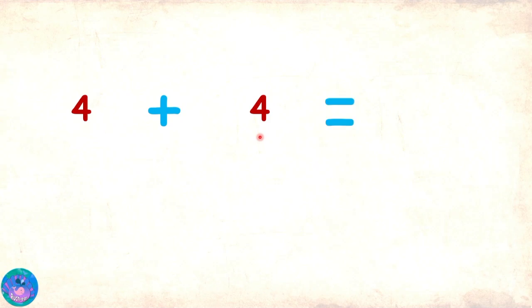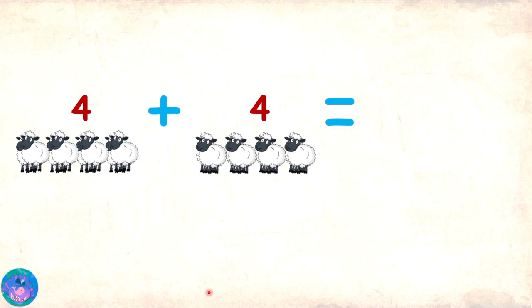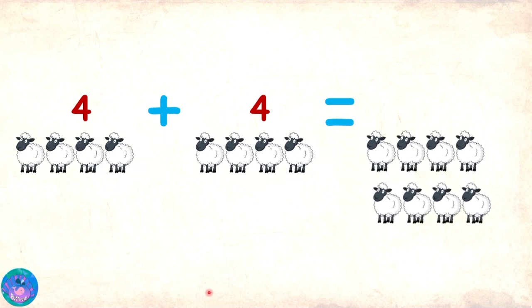And another one. Four plus four. Now, what would that be equal to? Can we do sheep this time? Definitely. So we need to calculate four sheep plus four sheep. Let's bring them together and count them together. One, two, three, four, five, six, seven, eight. Four sheep plus four sheep equals eight sheep. Or, four plus four equals eight.